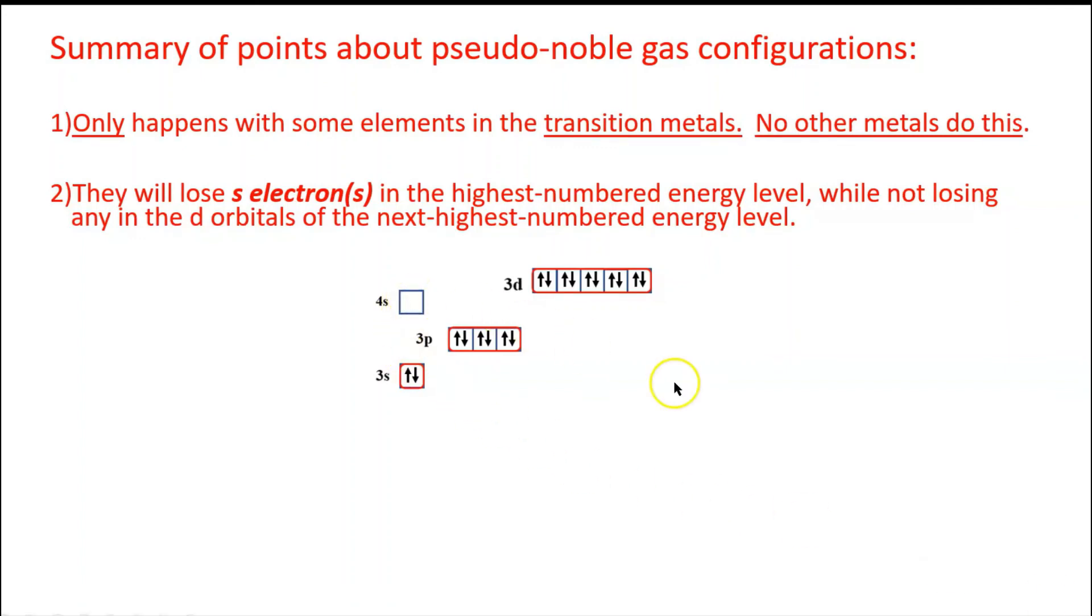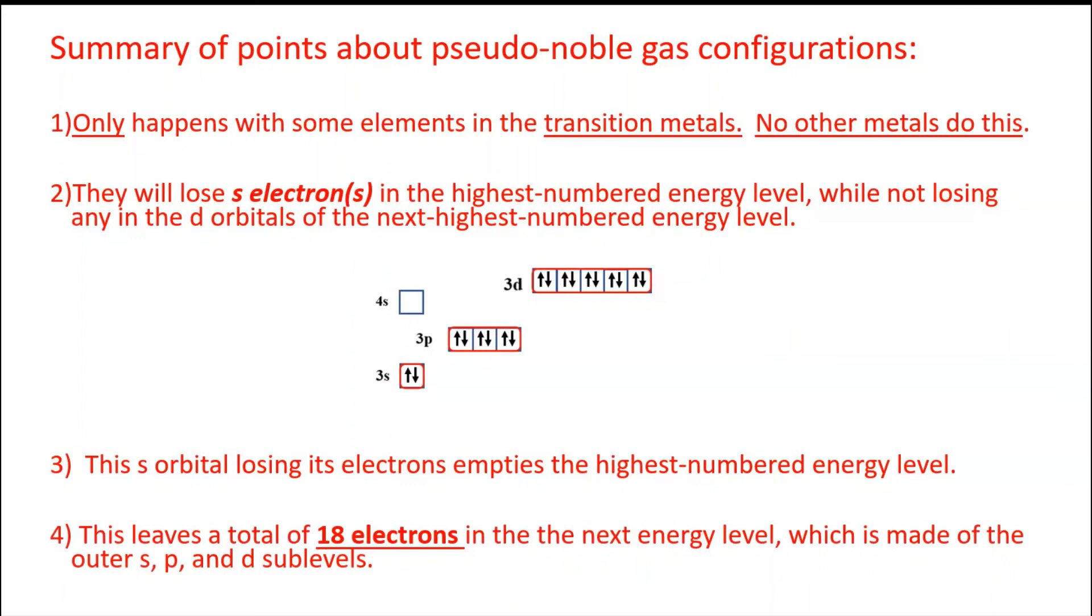This s orbital losing its electrons empties the highest numbered energy level and this leaves a total of 18 electrons in the next energy level, which is made of the outer s, p, and d sub levels. And those are the big points, and that is it.